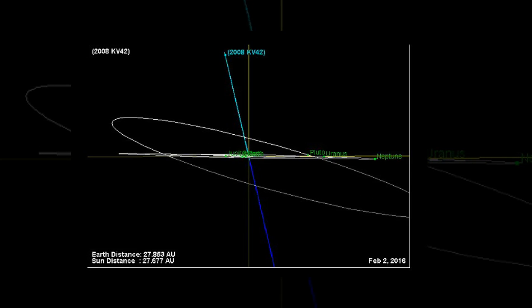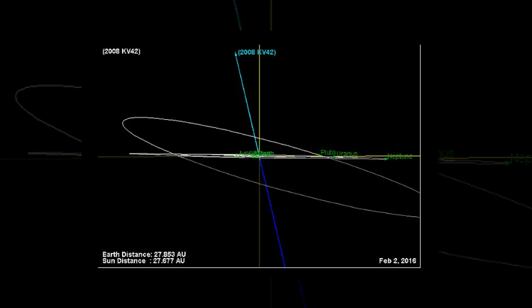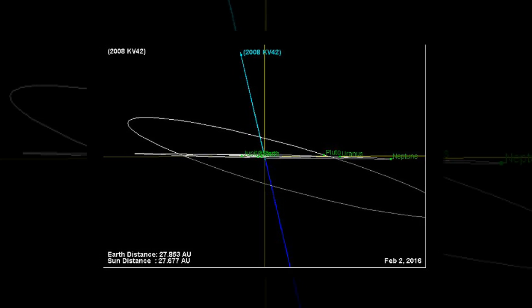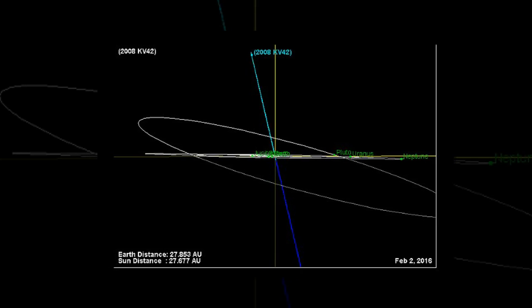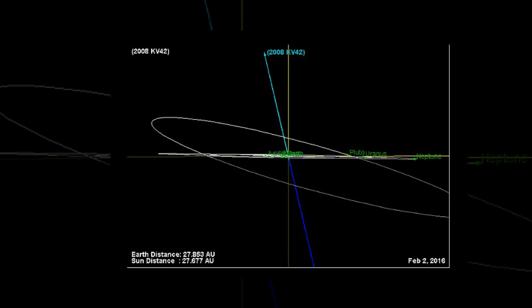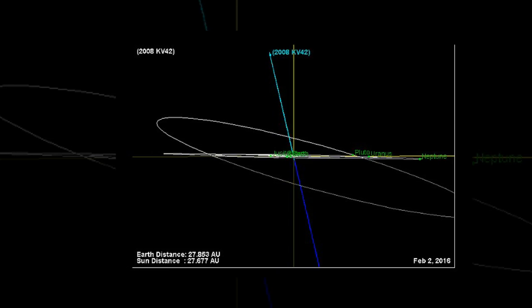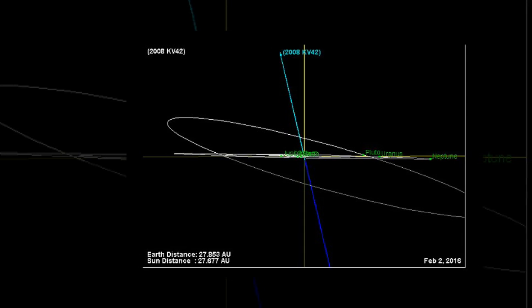The astronomers used the Panoramic Survey Telescope and Rapid Response System 1 survey on Haleakala, Hawaii to study NIKU. Michelle Bannister, an astronomer at Queen's University in Belfast, said, something is keeping the orbits aligned when precession should slide them. I hope everyone has buckled their seatbelts, because the outer solar system just got a lot weirder.